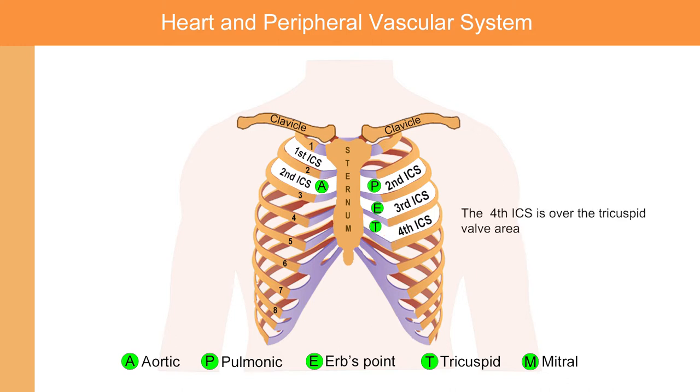The fourth intercostal space, on the left sternal border, is over the tricuspid valve area.